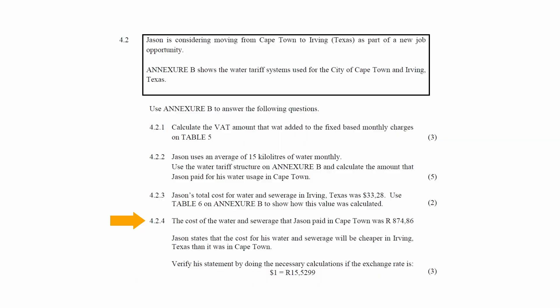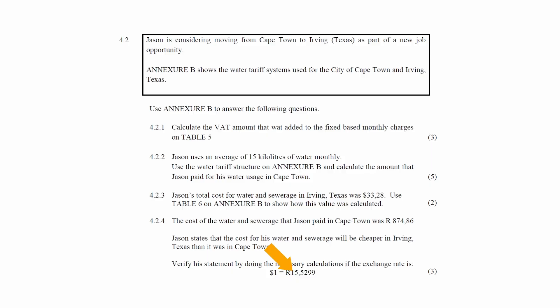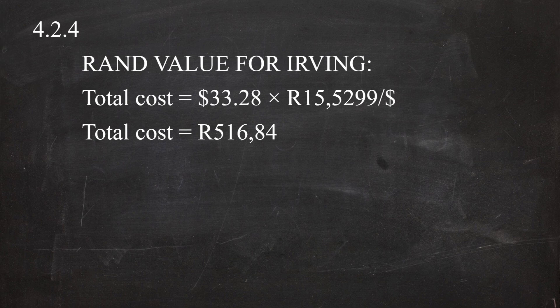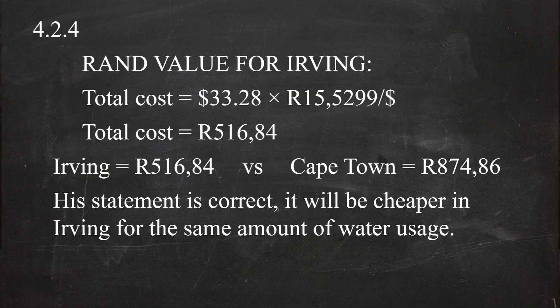In question 4.2.4, Jason's total cost for water and sewerage in Cape Town was R874.86. Jason stated that water and sewerage would be cheaper in Irving, Texas. To verify, convert $33.28 to rands using the exchange rate of $1 = R15.5299, giving R516.84. Comparing R516.84 to R874.86 confirms that Irving is cheaper. Therefore, Jason's statement is correct — it will be cheaper in Irving for the same amount of water usage.